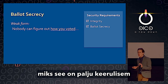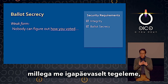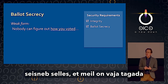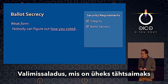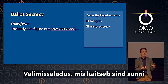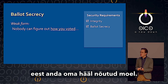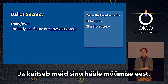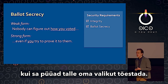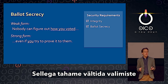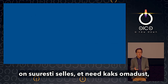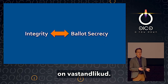The second requirement — and the reason this is more complicated than problems we more routinely solve like banking online and electronic commerce — is ballot secrecy. The secret ballot, which is one of the most important technological advances in the history of election technology, protects you from being coerced into voting a certain way and protects us from you selling your ballot. No one can figure out how you voted, even if you try to prove to them how you voted. These two properties, integrity and ballot secrecy, are in tension.